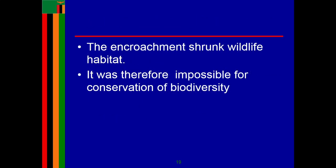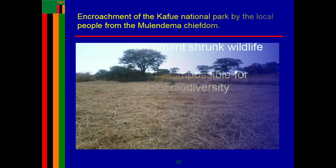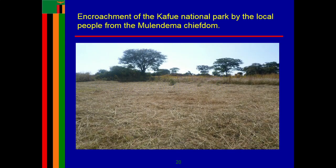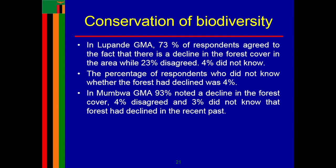The encroachment shrunk wildlife habitats in the two GMAs, making it impossible for conservation of biodiversity. This is an example of encroachment taking place in Mnendema chiefdom in Mumbwa GMA. In Lupande GMA, 73 percent of respondents agreed that there is a decline in forest cover, and in Mumbwa GMA, 93 percent noted a decline in forest cover.